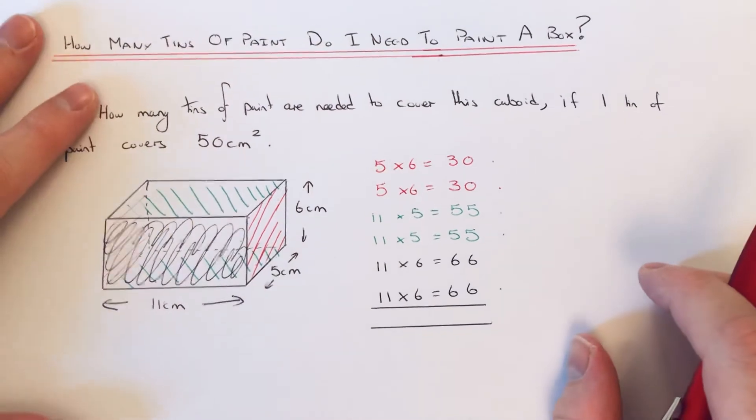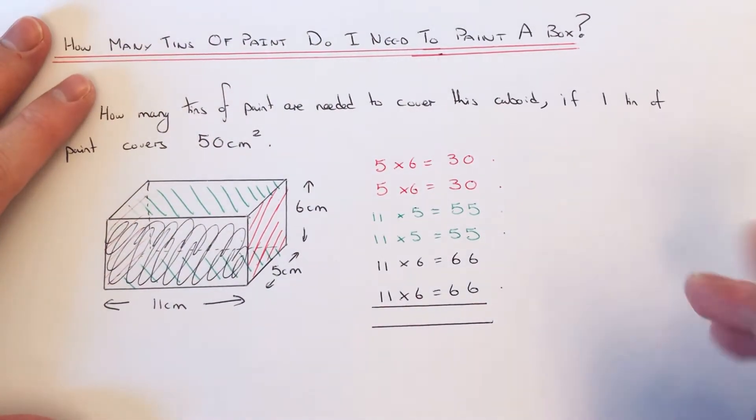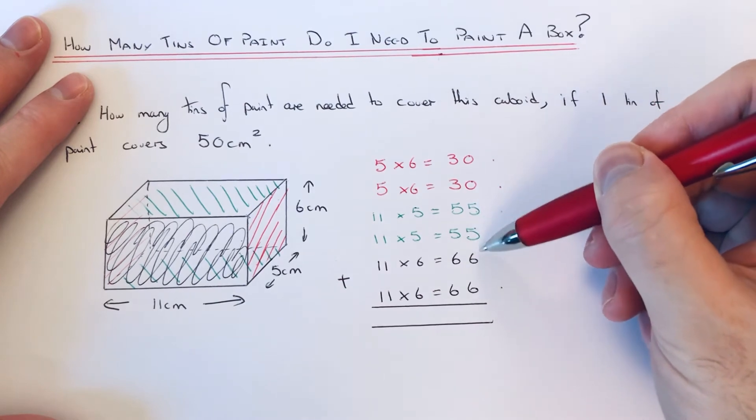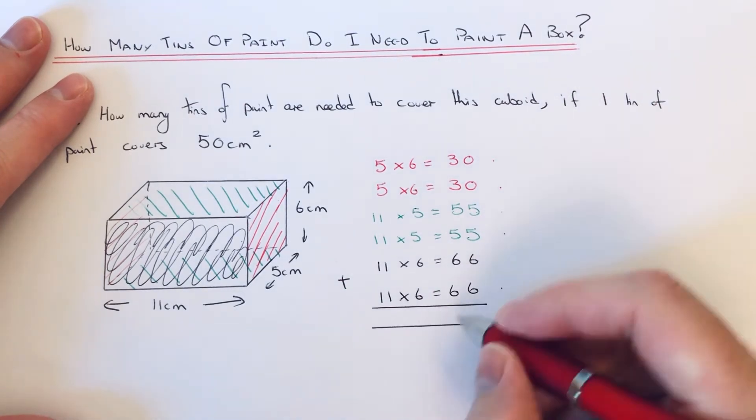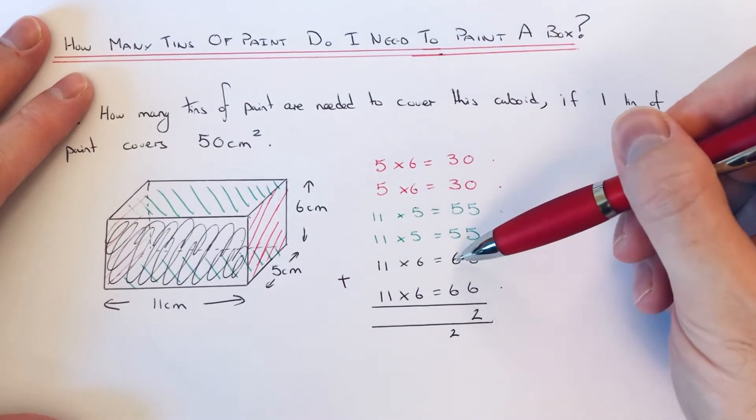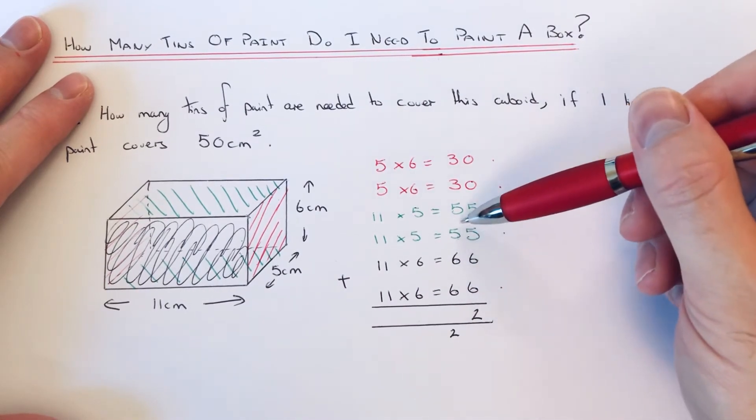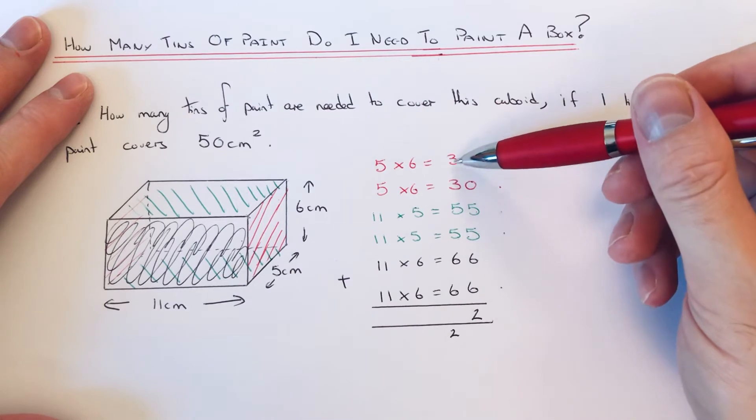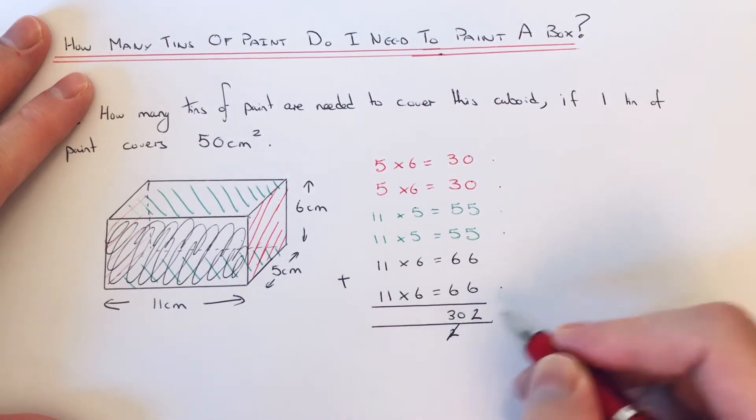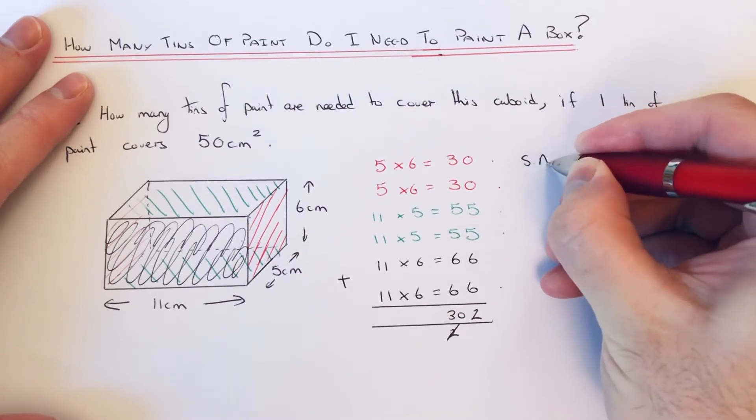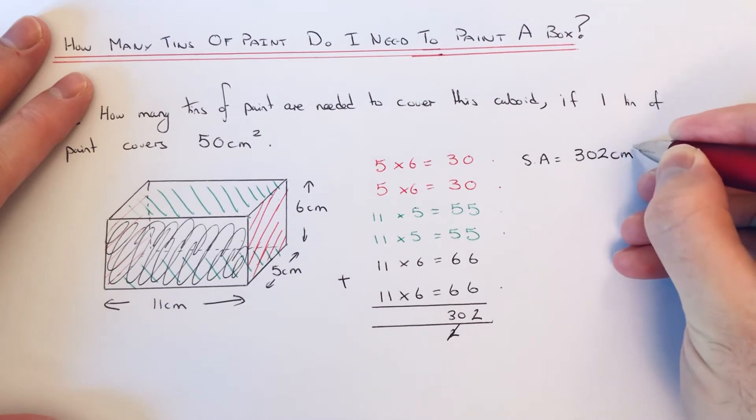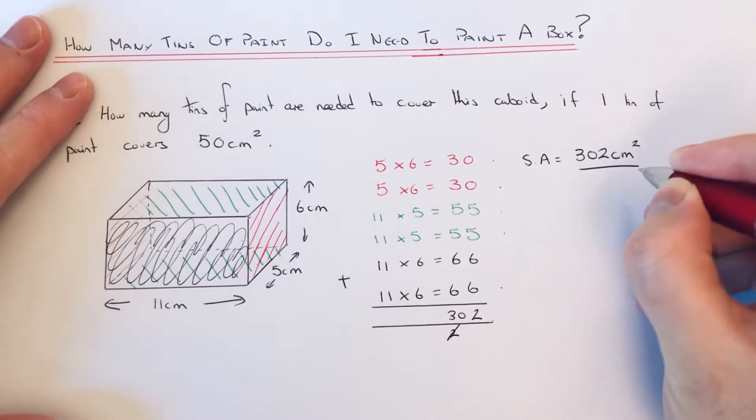This is the area that you're going to paint around the box. So if we add these up: 5, 10, 16, 22—you can use your calculator if you want to—6, 12, 17, 22, 25, 28, and the 2, then that's 30. So the surface area that we need to cover in paint is 302 centimeters squared.